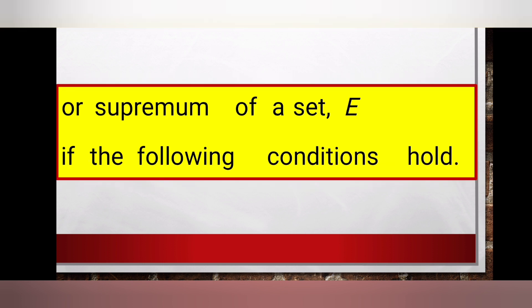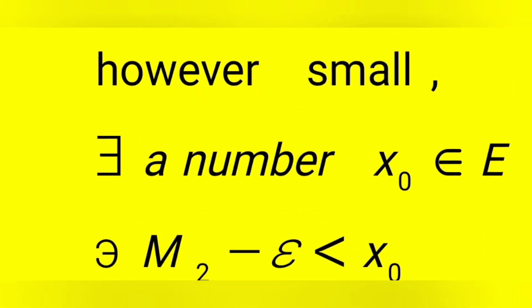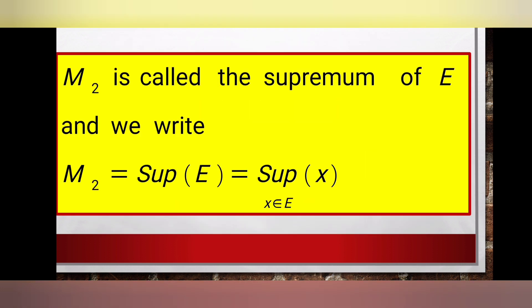Next, we will define the supremum of a set. A number m2 is called the least upper bound or supremum of a set E, a subset of ℝ, if the following conditions hold. One: x is less than or equal to m2 for all x in E. Two: given any epsilon greater than zero, however small, there exists a number x-naught in E such that m2 minus epsilon is less than x-naught.